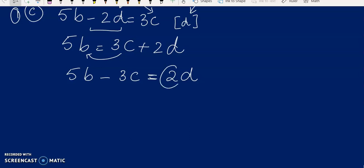Now 2 is being multiplied with D, so when it will go to the other side, it will be divided. Because multiplication's opposite function is division. So this is your answer, you can note it down in your copies.